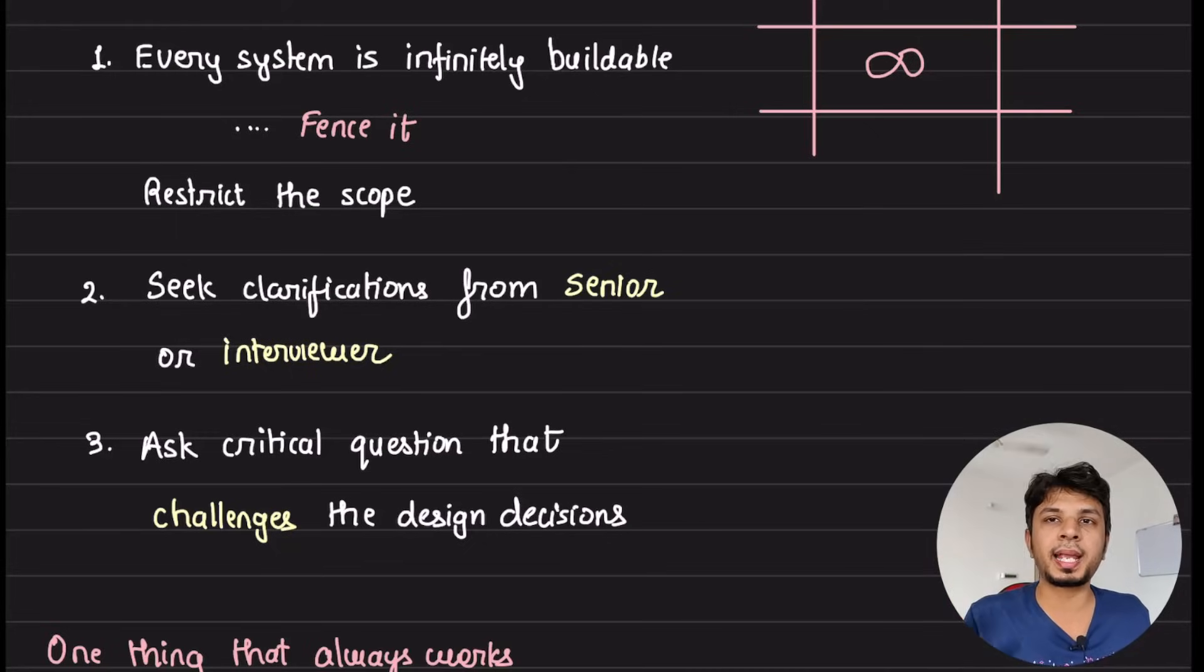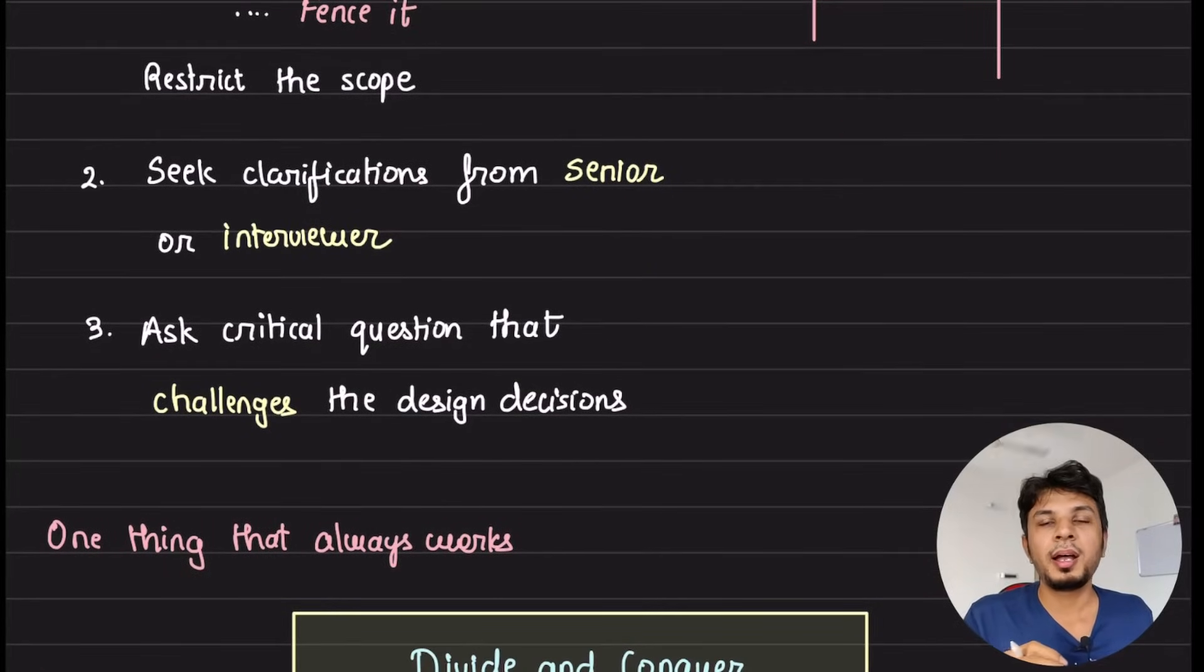Third and the most important key pointer is ask those critical questions that challenge design decisions. For example, protocol A versus protocol B. Why are we using HTTP? Why can't we go for gRPC? Ask those critical questions that actually challenge your design decisions.